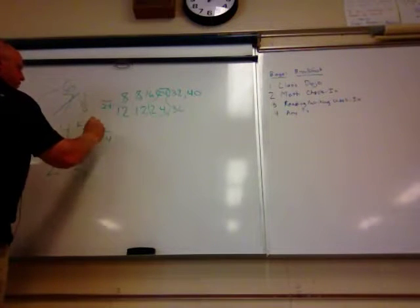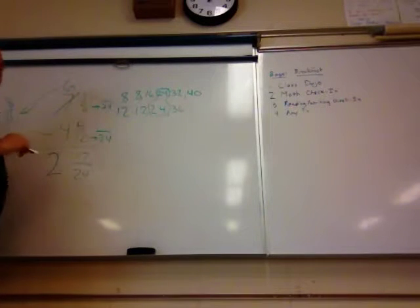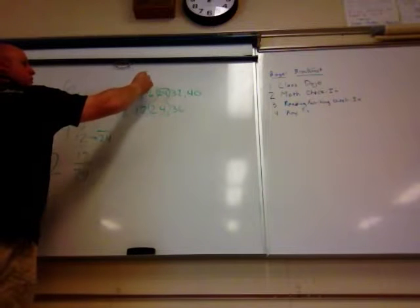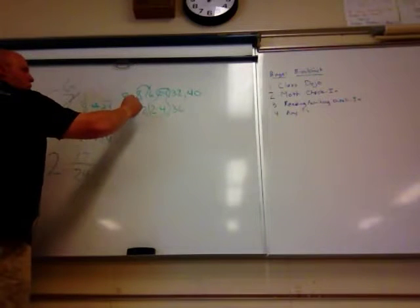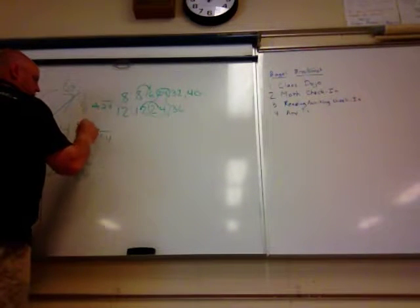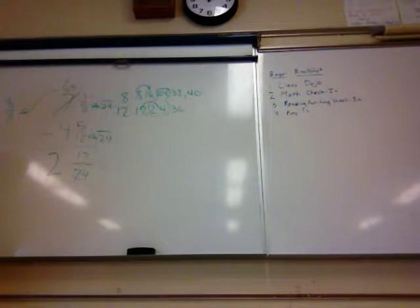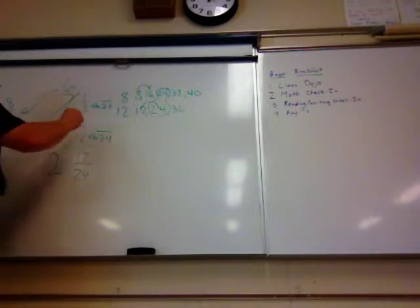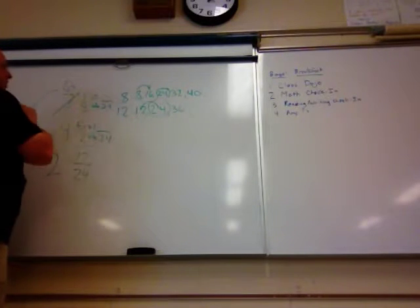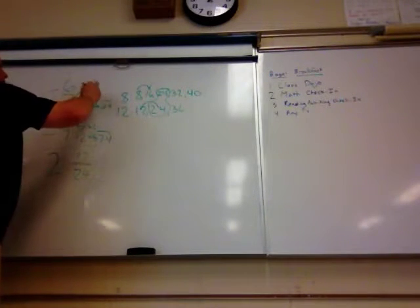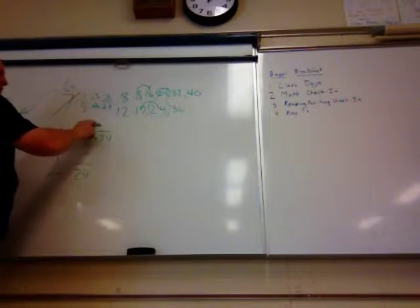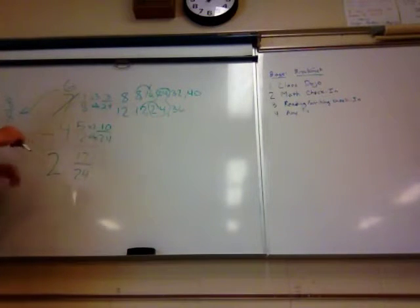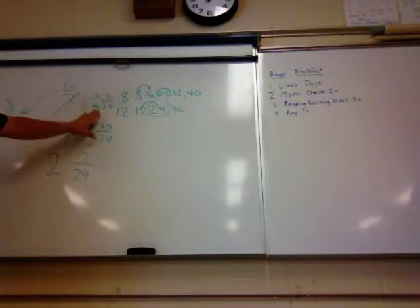What did I do to get from 8 to 24? 1, 2, 3 — times 3. What did I do to get to 24 from 12? 1, 2 — times 2. And we know from one of the very first days of math class that whatever we do to the bottom, we must do to the top. What is 1 times 3? 3. What is 5 times 2? 10. So our new problem is 3 over 24ths minus 10 over 24ths.